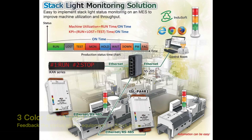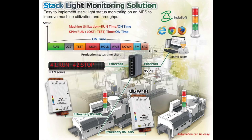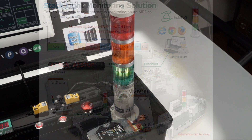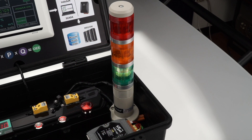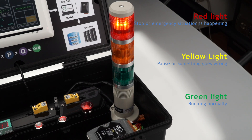Single stack light. The stack light provides feedback on equipment status: green light stands for running normally, yellow light stands for pause or something going wrong, and red light stands for stop or an emergency situation.